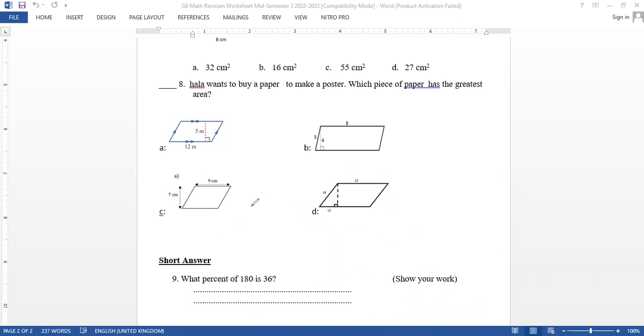Number nine is short answer: what percent of 180 is 36? He said 'what percent,' so he wants the percent. 'Of 180' means this is the total or the whole. 'Is 36' - this is the part. To find the percent, we multiply the part, which is 36, by 100, over 180. You have to show your work.